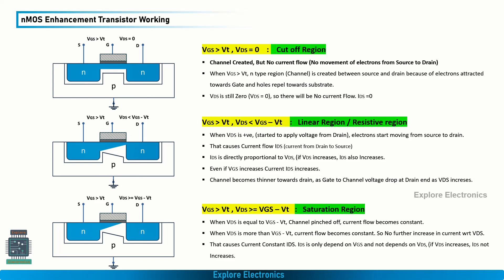The next region is the saturation region. In the saturation region, if we increase VDS further beyond VGS minus VT, the channel becomes pinched off — there is no channel at the drain end. Because of this, the channel current becomes constant. With these three regions defined, we now need to find the expression for current in each.